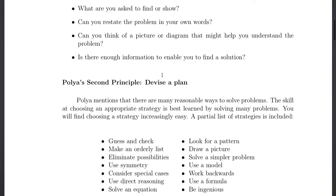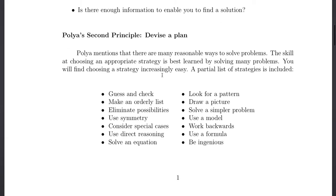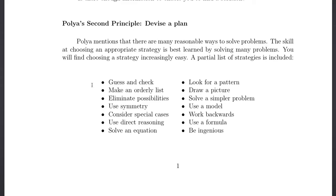Next is to devise a plan. Skill at choosing appropriate strategies is best learned by solving many problems. You can guess and check, make a checklist, make an ordered list, eliminate possibilities, use symmetry, consider special cases, use direct reasoning, or solve an equation.